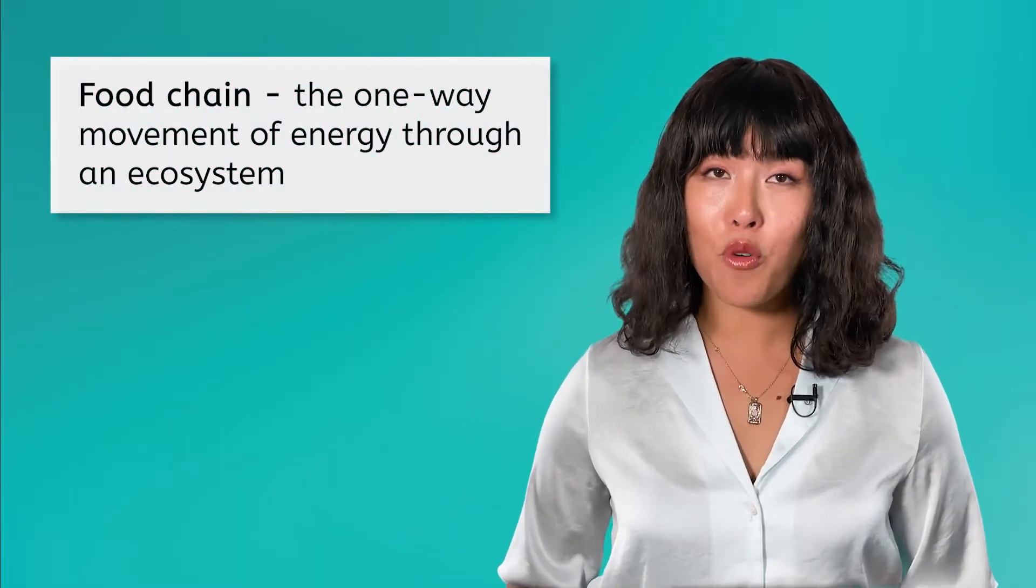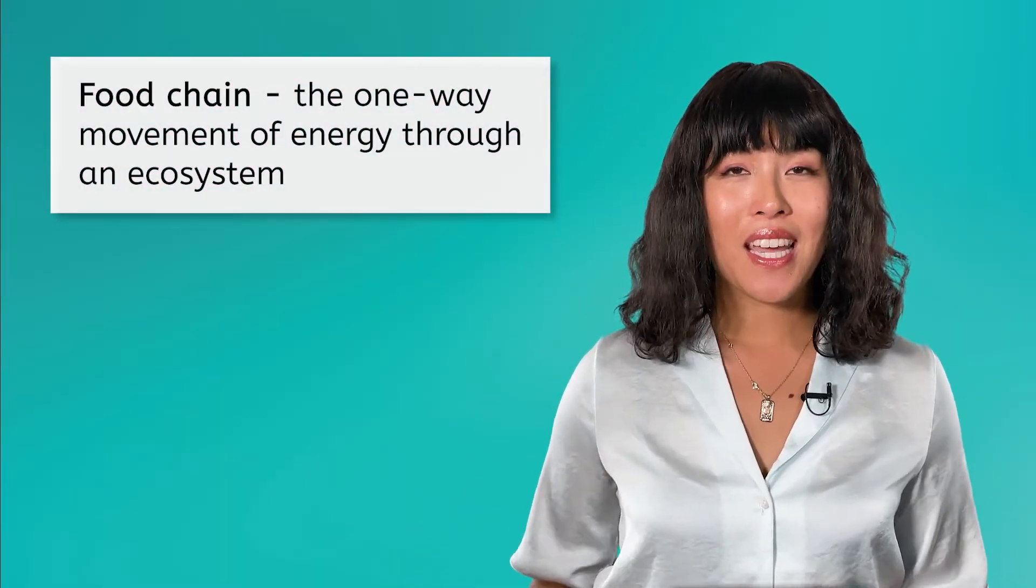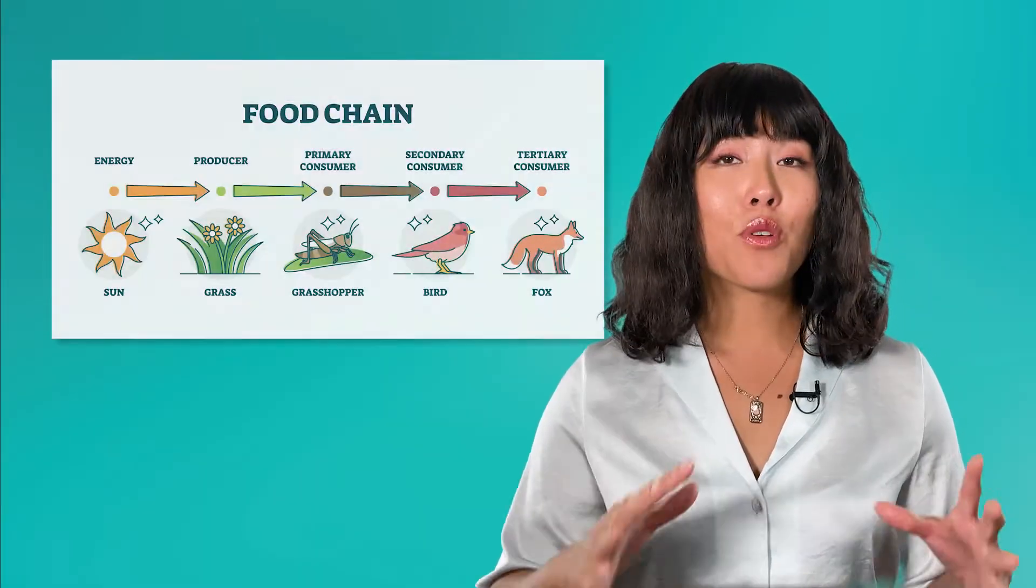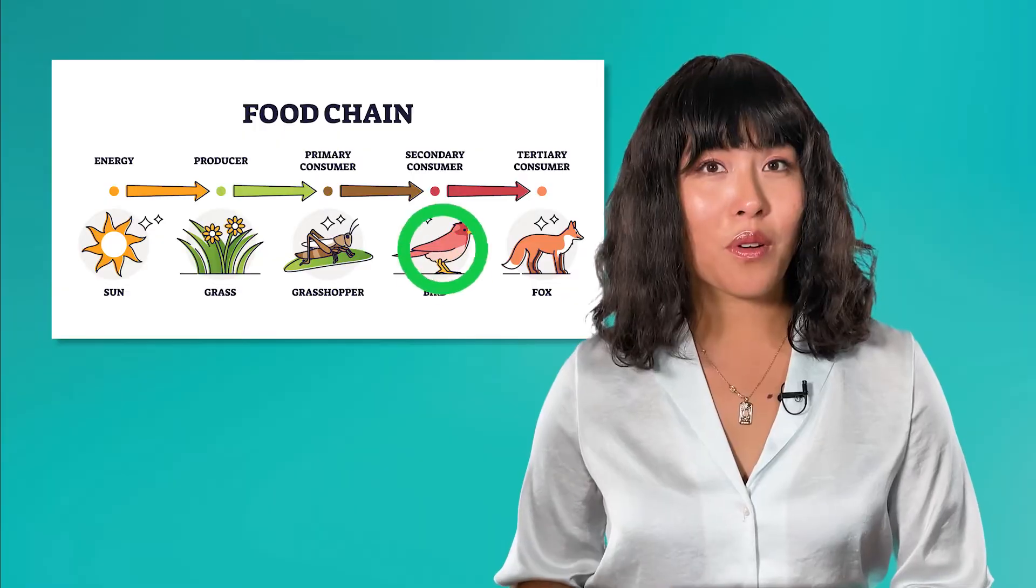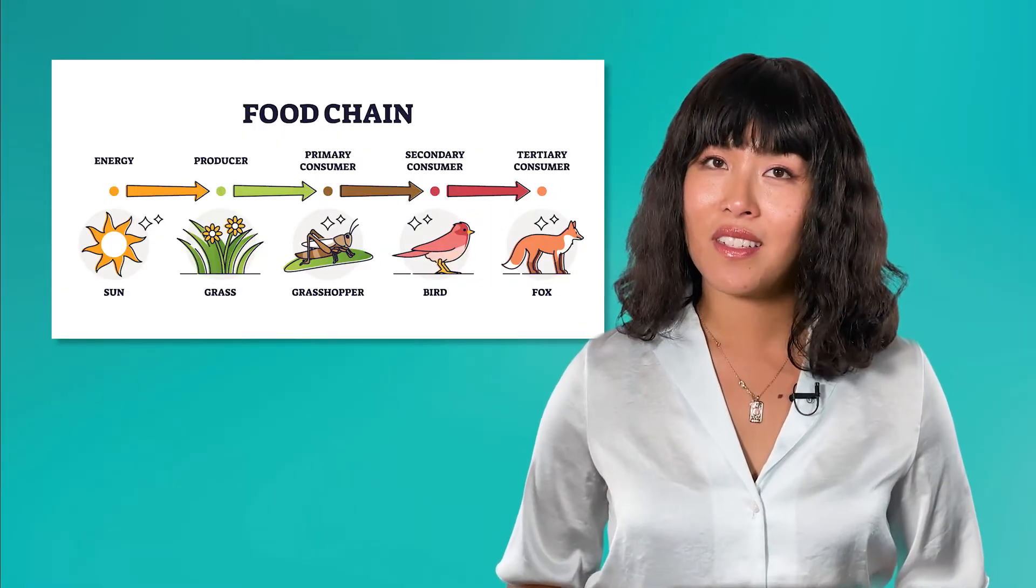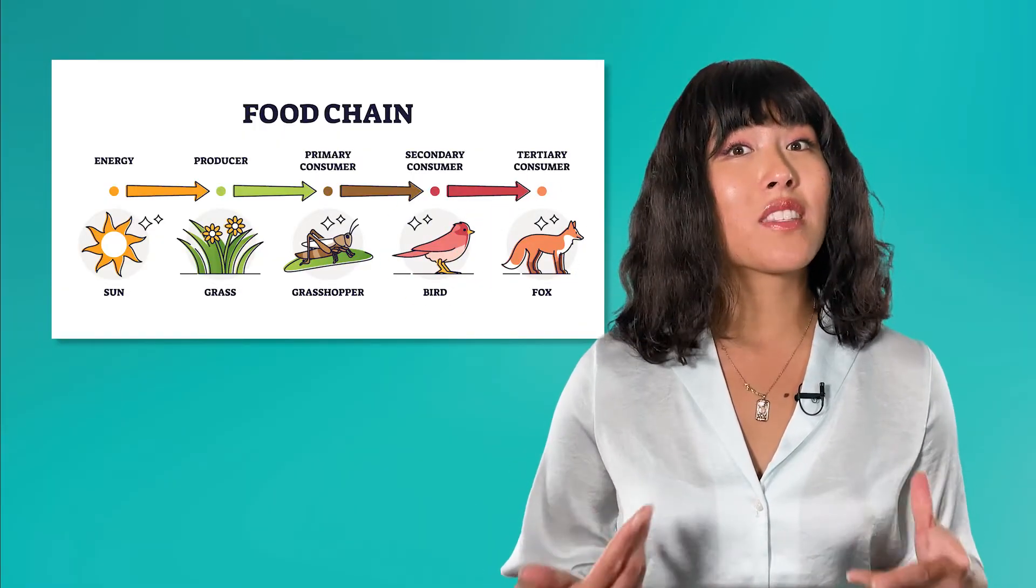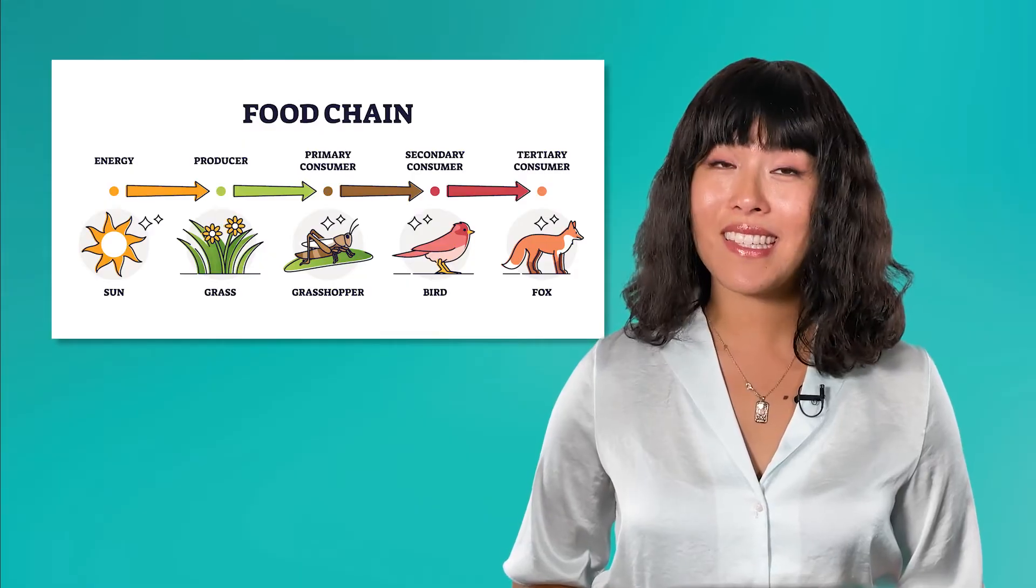The breakfast situation we just saw unfolding is an example of a food chain. A food chain is a one-way movement of energy through an ecosystem. In this example, the energy moves from the sun to the grass, to the grasshopper, then to the bird, and finally to the fox. Energy moves up through the consumption of food, both plants and animals.